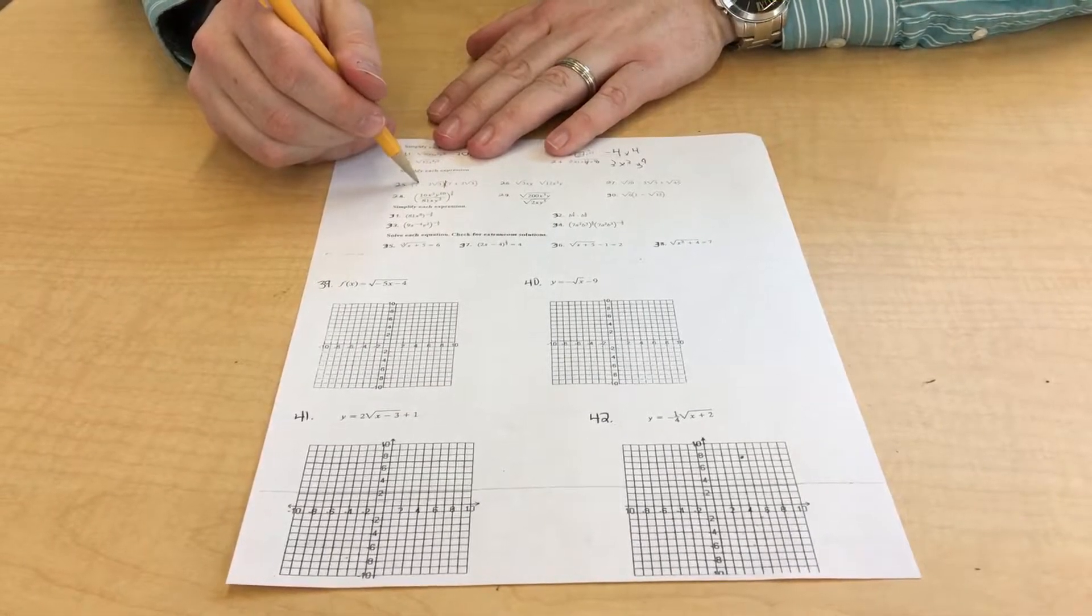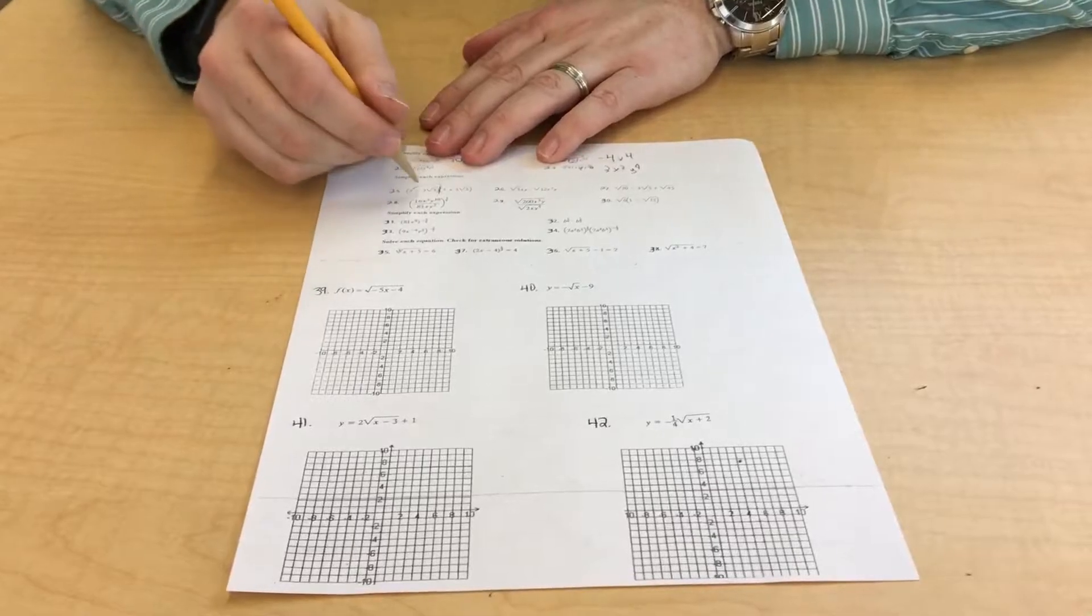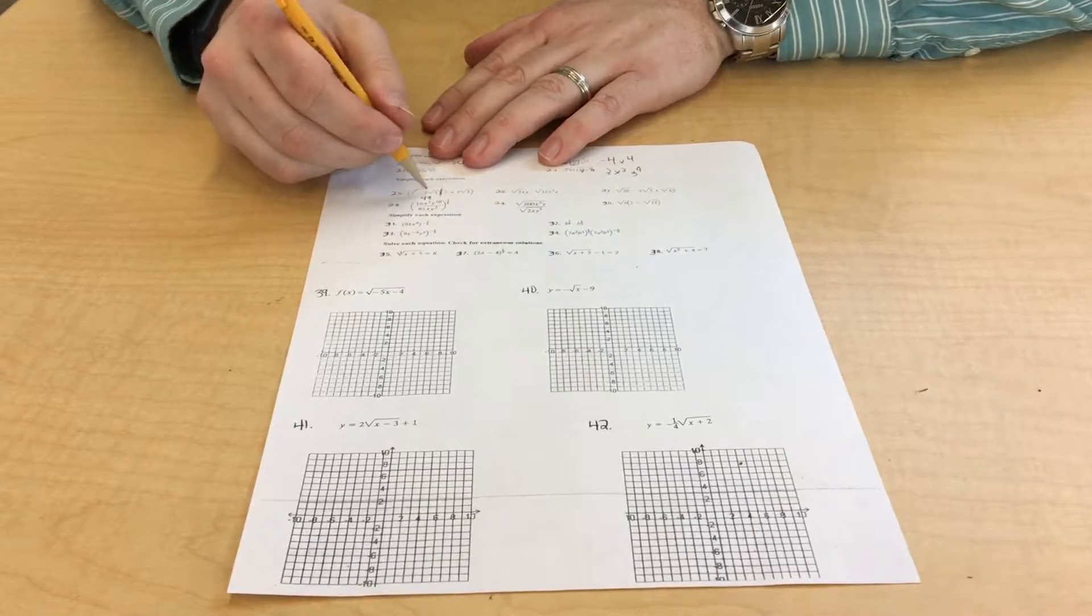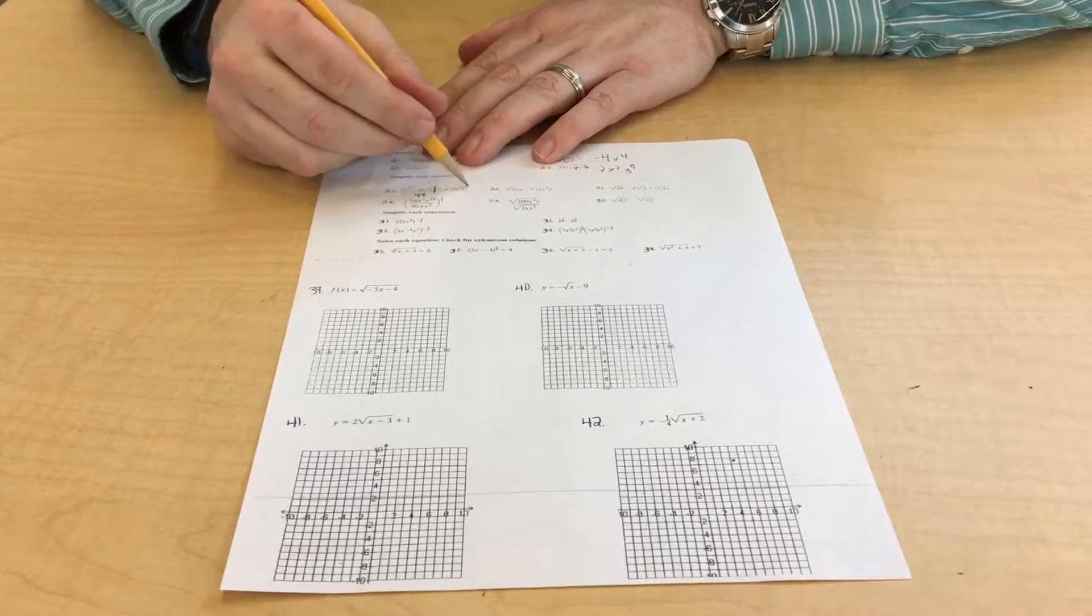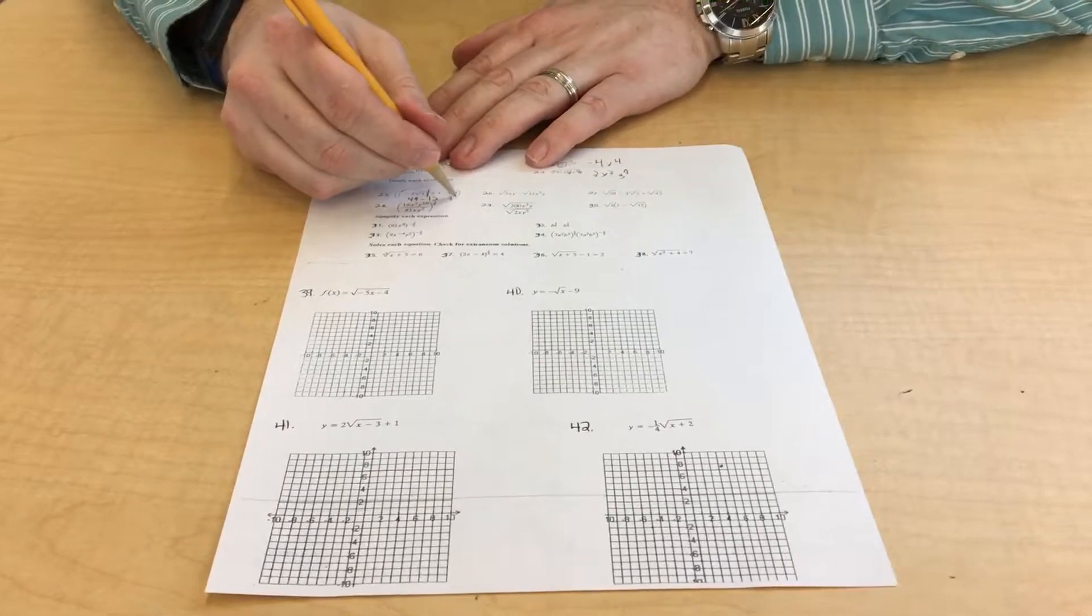On this part down here, remember on these, you're going to have to foil it, but these are conjugates, so it's going to make the square root stuff go away. You're going to have 49 right here, and then 2 squared is 4, and then times 3 is 12. So 49 minus 12 is going to make this one a 37.